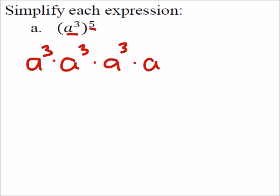But I have five of these a to the power of threes, so there's five of them. So we have this common base a, and since we're multiplying all the same bases, we can just add all the exponents.